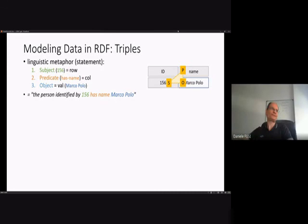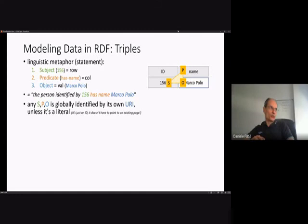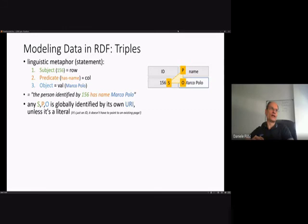Any subject, predicate, and object is globally identified by its own URI, unless it's a literal — a primitive value like a number or a name. The fact that each part is identified by a URI doesn't mean it has to point to an existing page; the URI here is used simply as a means to uniquely identify each concept in our triples.